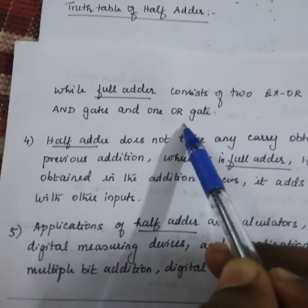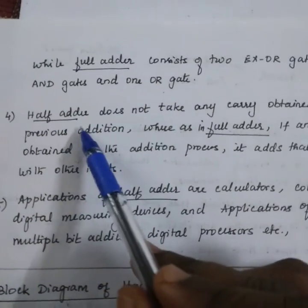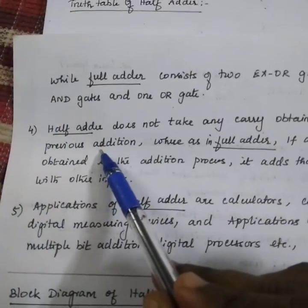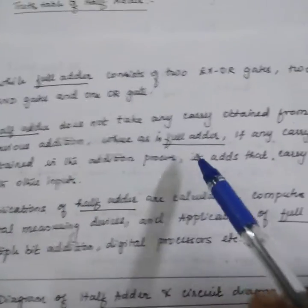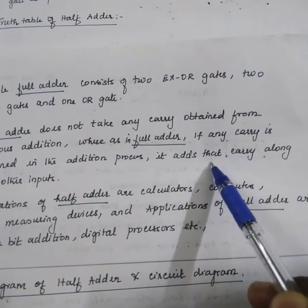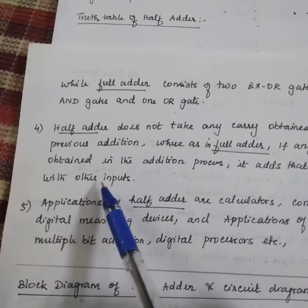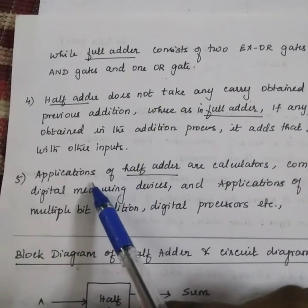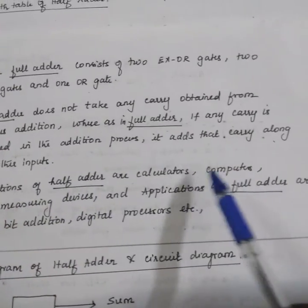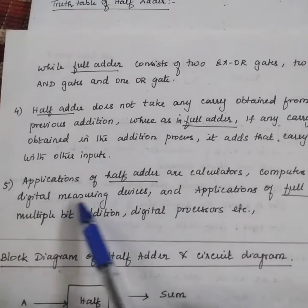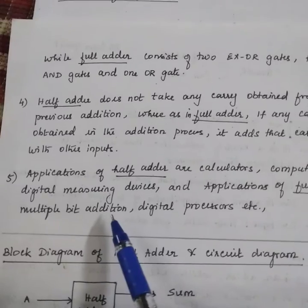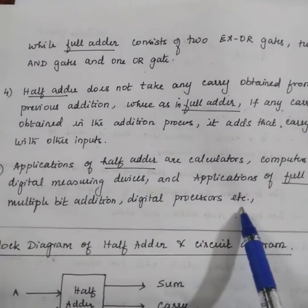Fourth point: half adder does not take any carry obtained from previous addition, whereas in full adder, if any carry is obtained, it adds that carry along with the other inputs. Next point: applications of half adder are calculators, computers, digital measuring devices, and applications of full adder are multi-bit addition, digital processors, etc.